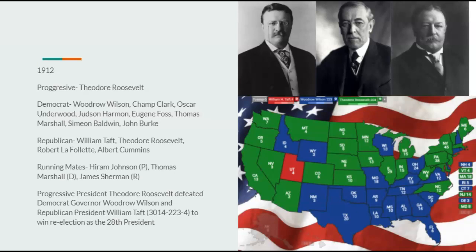Going on first with the 1912 Election, we just give Roosevelt each state in order of how he lost it. He'd win Vermont, taking it from Taft, leaving him with four itty-bitty electoral votes. Progressive President Theodore Roosevelt would defeat Democrat Governor Woodrow Wilson and Republican President William Taft, 304 to 223 to 4, to win re-election as the 28th President. World War I would end sooner. I'm posting a link in the description to a video by the Alternate History Hub about Roosevelt's first term — go watch it.